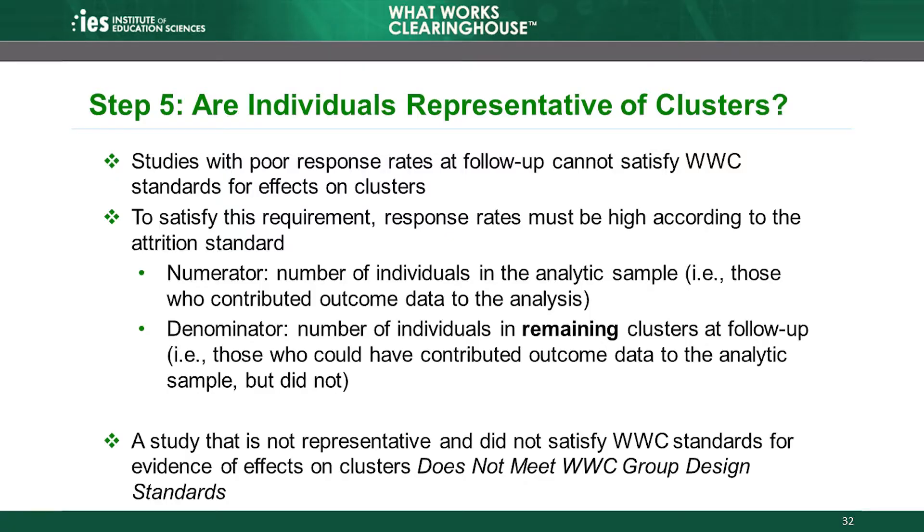The WWC uses a calculation very similar to the assessment of individual non-response in Step 3 to determine whether the response rate for individuals is high enough to be considered representative of the clusters. Like Step 3, the WWC assesses representativeness using the same WWC attrition standard discussed in the attrition module, which is Module 2. Just as in the calculation for individual non-response in Step 3, if a cluster were to drop from the study before follow-up, the WWC does not include the individuals from that dropped cluster when measuring representativeness. In other words, the WWC considers the representativeness of only the clusters included in the analytic sample.